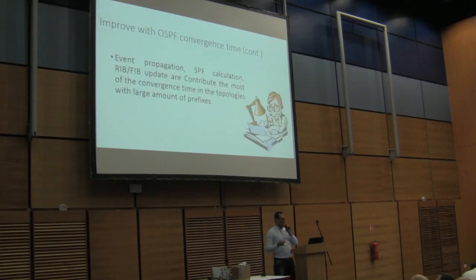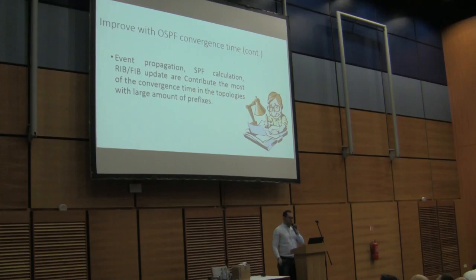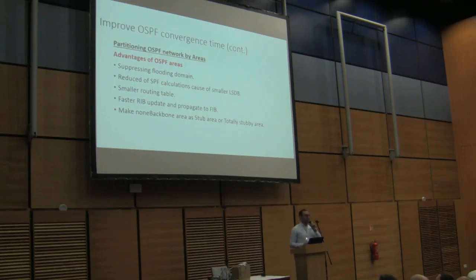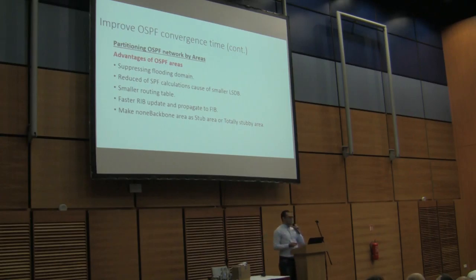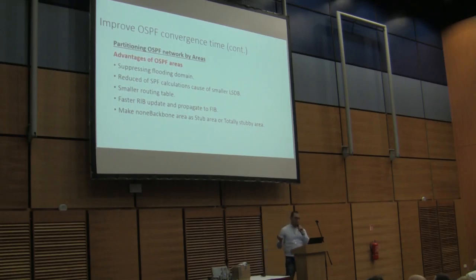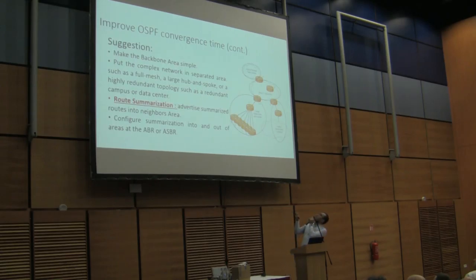Another area is event propagation, SPF calculation, and RIB/FIB updates — these are the parts that most contribute to convergence time. Some techniques are needed to reduce this time. Inside OSPF, we should partition our network using OSPF areas. This helps suppress the flooding domain, reduces SPF calculation, each area will have a smaller link-state database and a smaller routing table, which helps faster RIB updates and FIB updates. If possible, we should try to make non-backbone areas into stub areas or even totally stubby areas.